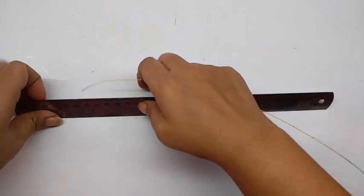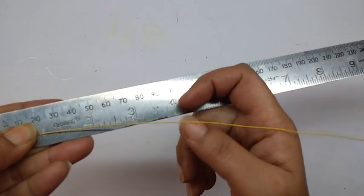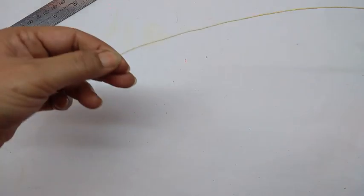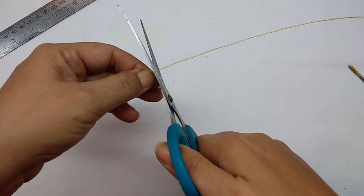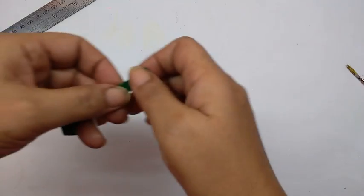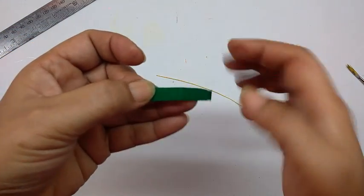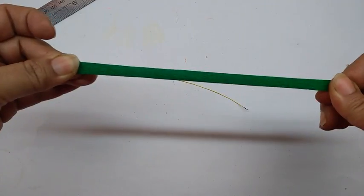Take the thin wire and measure about 4 inches on it. Cut this piece out. Now take a strip from the green paper, about half a centimeter wide. Cut it and stretch it.